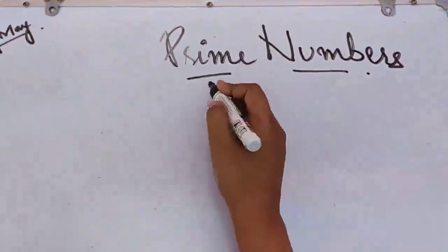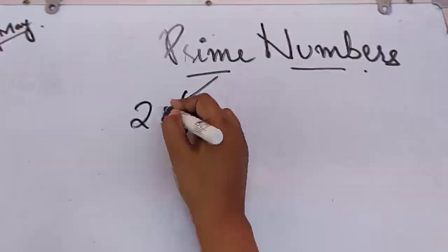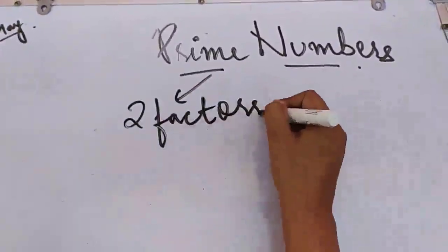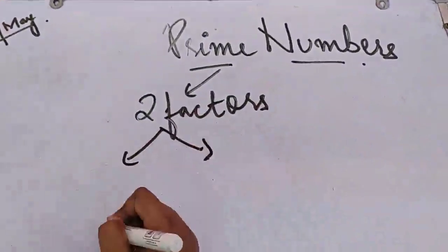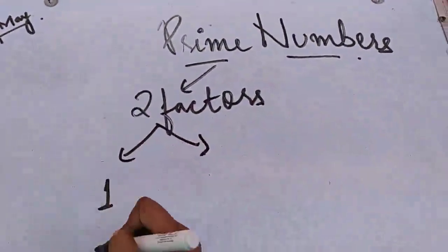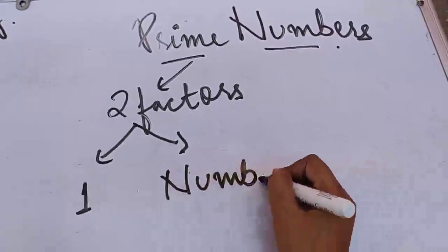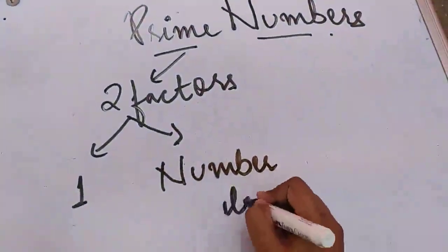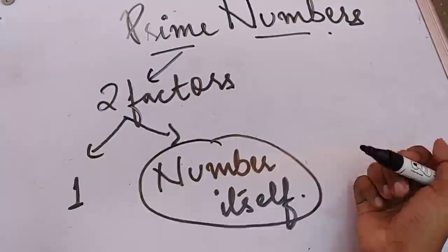Prime numbers, what are they? Prime has two factors. Two factors which are already predefined. How should they be? One should be 1 as a factor, and one should be the number itself. For number itself, what term do we use? Number itself. What does this mean? The number itself.